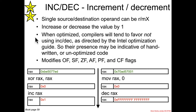When assembly is optimized, compilers will frequently tend to not include inc and dec, because the Intel optimization guide says not to. So if you see an inc and dec, it may indicate unoptimized code, or the compiler is not following Intel's best practices, or it might even be some handwritten assembly.